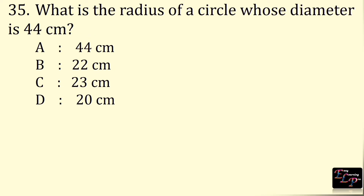What is the radius of a circle whose diameter is 44 cm? Diameter is 44 cm. Radius is always half of diameter: 44 ÷ 2 = 22 cm.